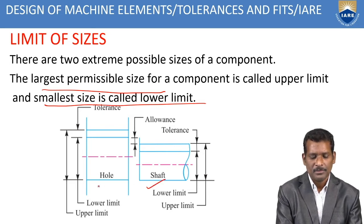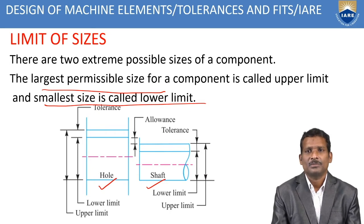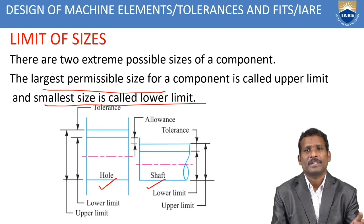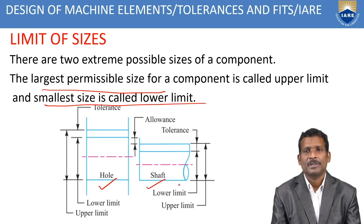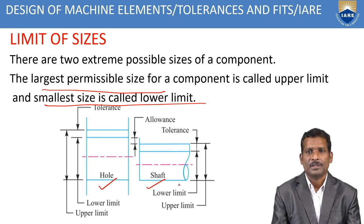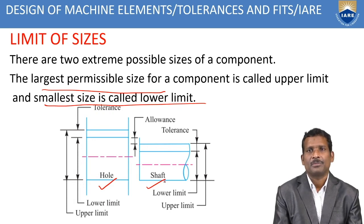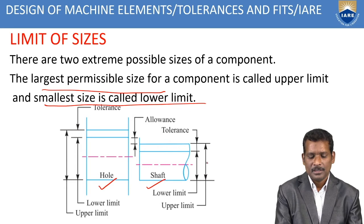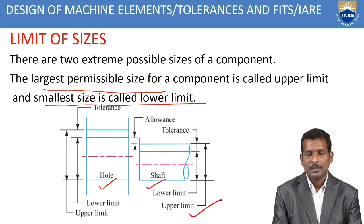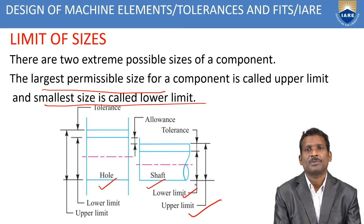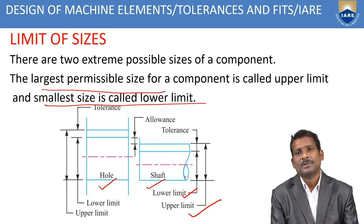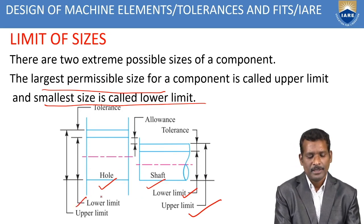This is a shaft dimension and a hole dimension. The hole is designated as the internal dimensions of a component and the shaft is designated as the external dimensions of the component. The shaft dimension has an upper limit (the largest size) and a lower limit (the smallest size). Similarly, the same applies for hole dimensions — lower limit and upper limit.